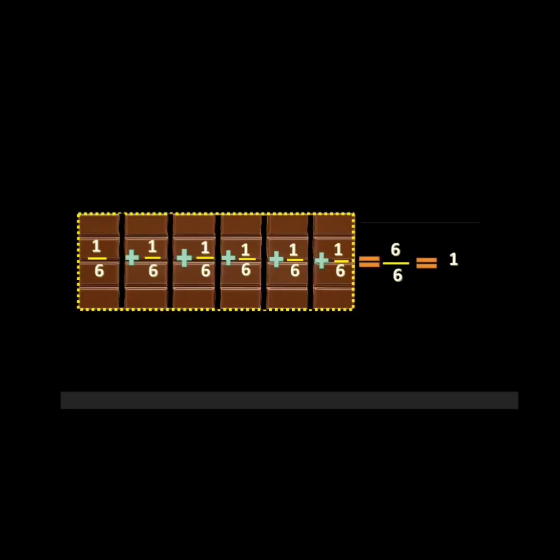Just like that, when we add each part of six equal parts, we get the same answer: one whole. Because the total chocolate bar is divided into six equal parts, the denominator is six, and each time we are taking one as the numerator. So the total sum of the numerator is six, and six upon six equals one whole.